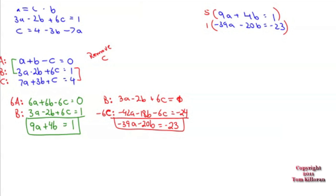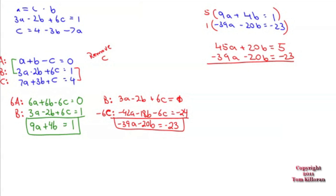The bottom equation is negative 39a minus 20b equals negative 23. Add them together: 10y minus 9y... actually 45a minus 39a is 6a, and 20b minus 20b cancels. So 6a equals negative 18. A sign mistake here will take forever to find, so be careful at every step. Divide by 6 and a equals negative 3.